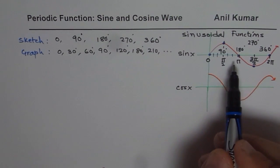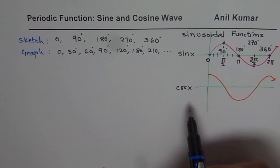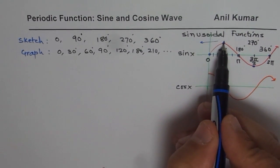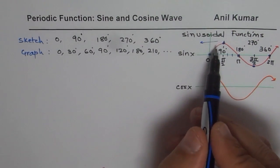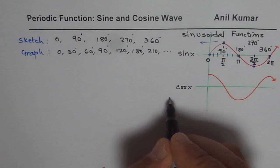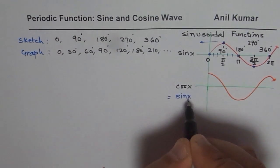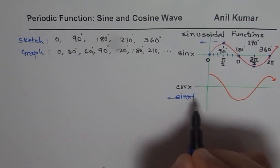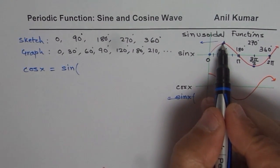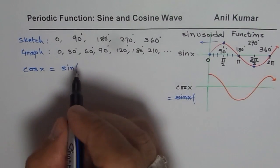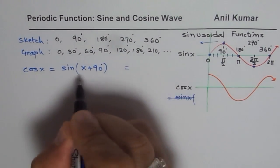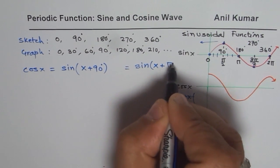Now let's see how we can get the cosine function from the sine function. If I move the sine function to the left by 90 degrees, then the peak comes to x equals 0 — which is exactly the starting position for cos x. So in general, cos x can be written as sine of (x + 90 degrees), or in radians, sine of (x + pi over 2).